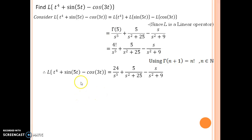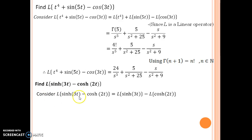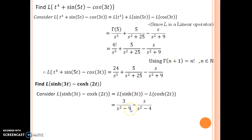Let us now solve one more problem: find Laplace of hyperbolic sin(5t) minus hyperbolic cosine(5t). Taking Laplace of both sides and distributing over the minus sign using the linearity of the Laplace operator, Laplace of sinh(5t) is 5 upon s squared minus 25, and Laplace of cosh(5t) is s upon s squared minus 25, giving us the final simplified expression.